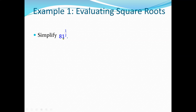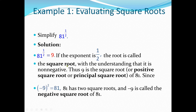Let's evaluate the square root of 81. An exponent of one-half is called a square root. This means: what two numbers, when multiplied together, give 81? The answer is nine, because nine times nine is 81. So the square root of 81 is nine. In calculus and college algebra, a square root value always has to be positive — it must be non-negative. So nine is the principal square root of 81.